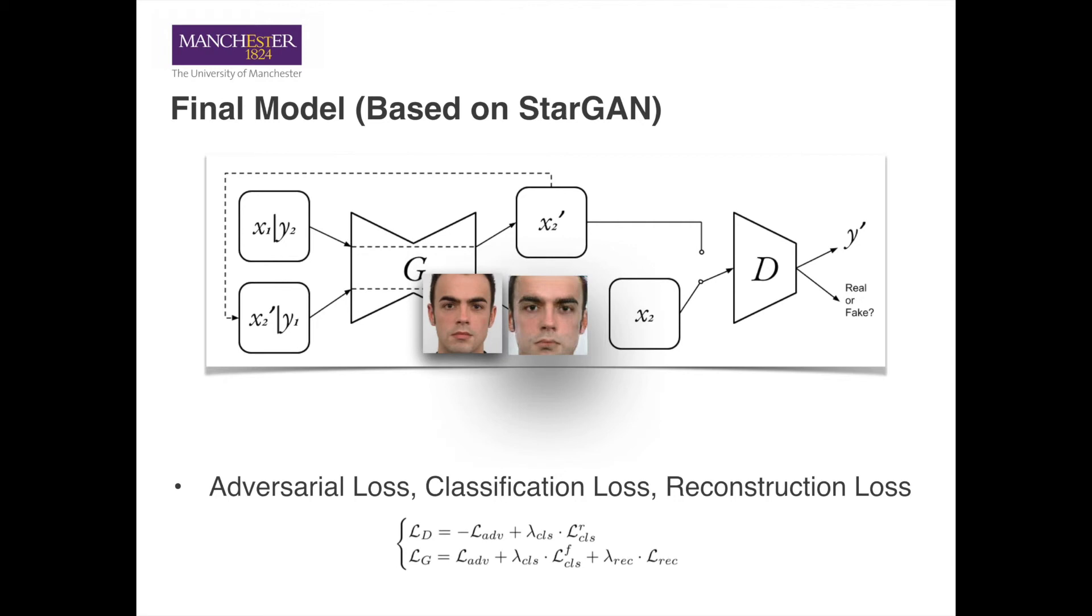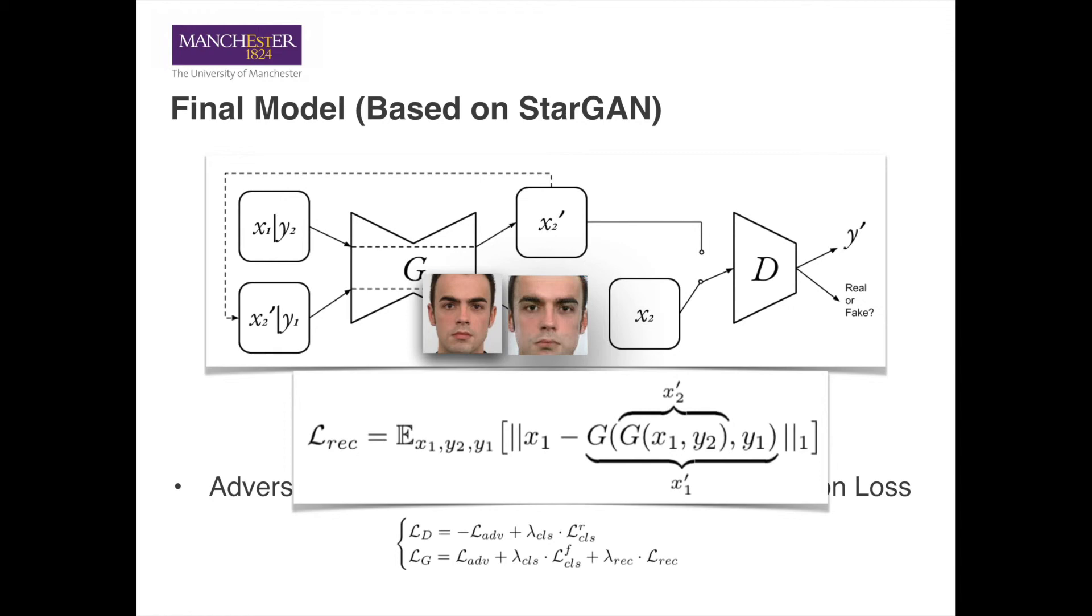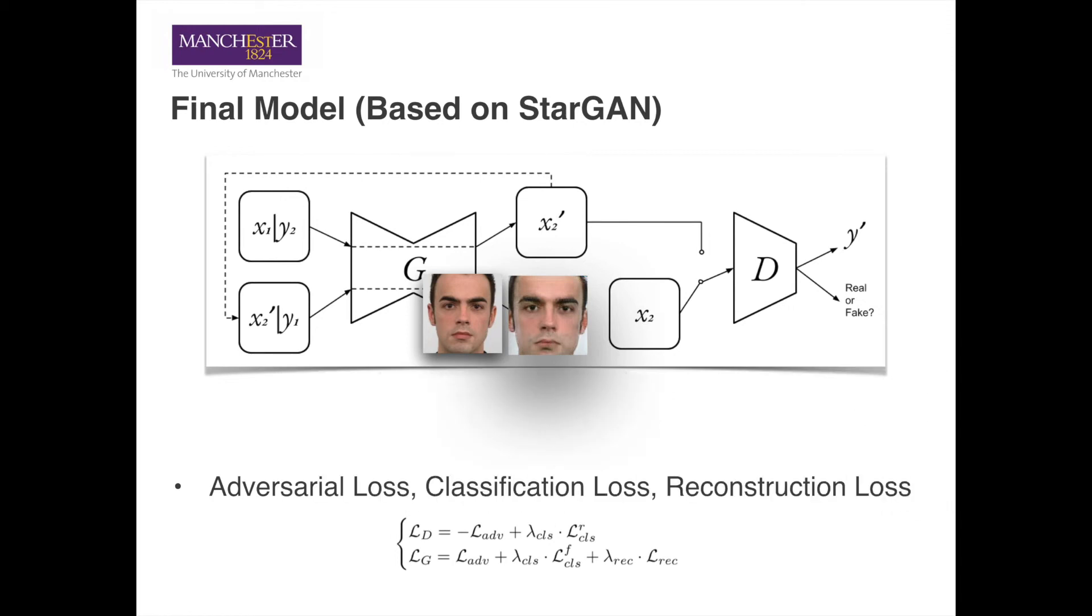Then, the resulting image is the reconstruction of the initial input. If we change the generator to minimize the difference between these two, then we may have a higher chance to preserve the identity.